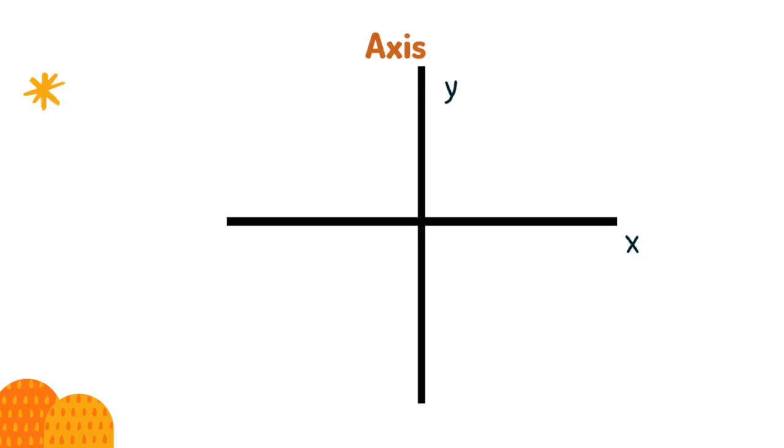The axis of a graph are the first things you draw when drawing a graph. It is important to know the difference between the x and y axis. The x goes across, horizontal axis, and the y goes up and down, vertical axis.